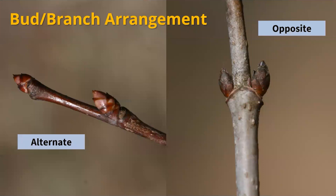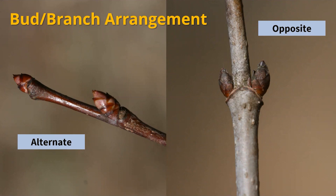One of the things we use buds for is to figure out the arrangement. Normally if we're identifying trees in summer we'd use the leaves to see if there are two leaves at one time — opposite — or just one, then another, then another — alternate. We don't have leaves in the winter, so we use the buds. The first characteristic I look for when I walk up to a tree is: is that tree opposite or alternate?